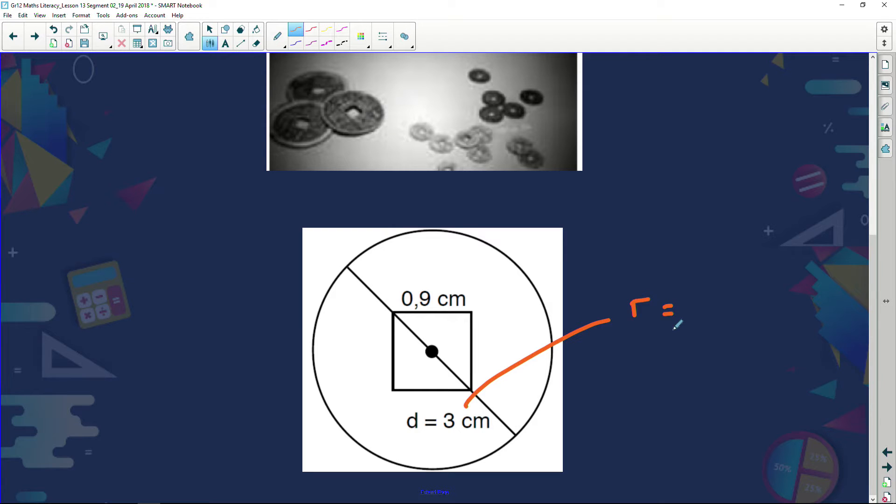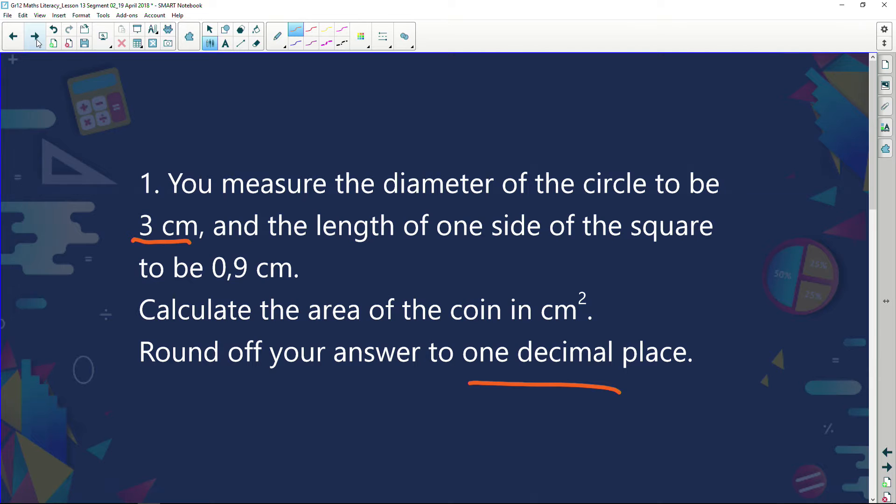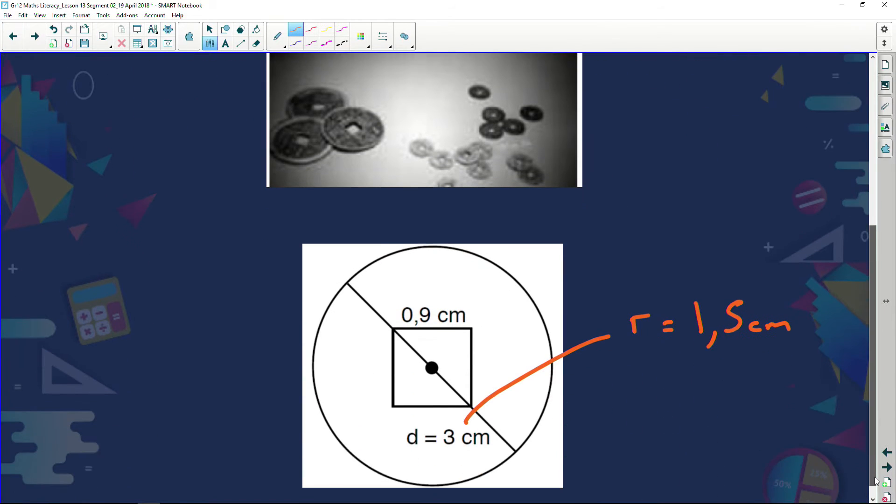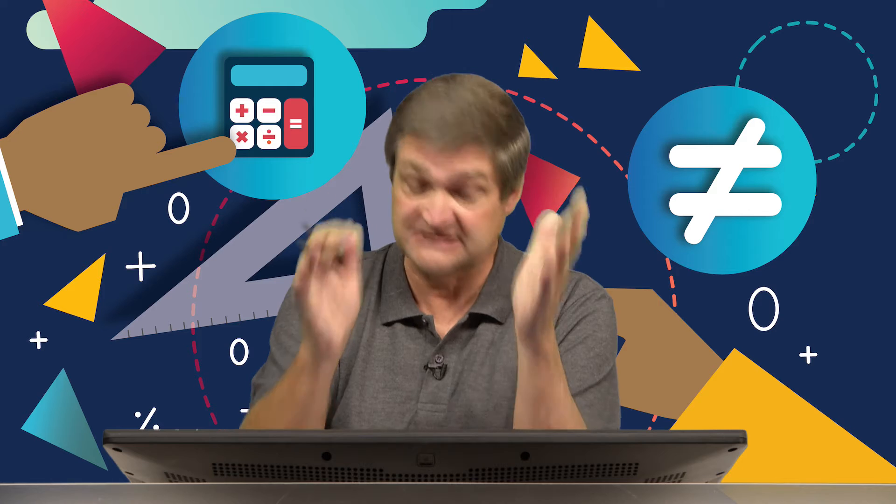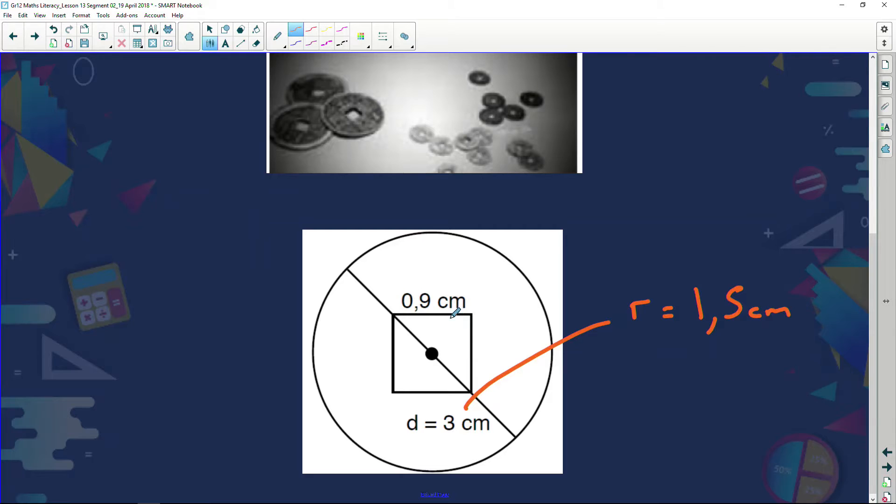Well, my radius is always half the diameter. So if my diameter is three centimeters, my radius must be 1.5 centimeters. The question also says that the length of one side of the square is 0.9 centimeters. So 0.9 centimeters is the length of that square. Now folks, because we're dealing with a square, I know that all the sides have to be the same. So if this is 0.9, this is also going to be 0.9 centimeters.